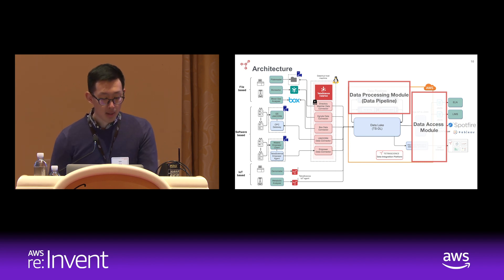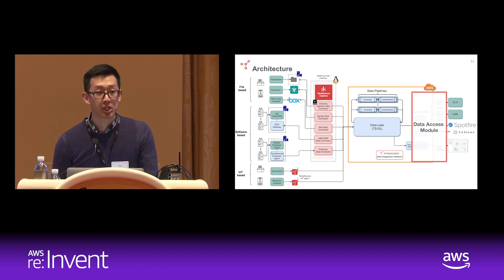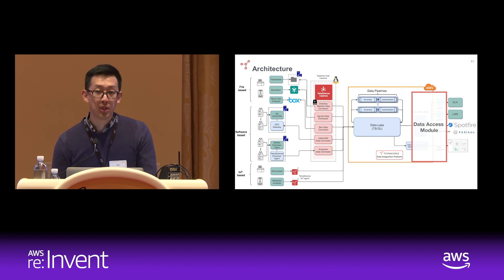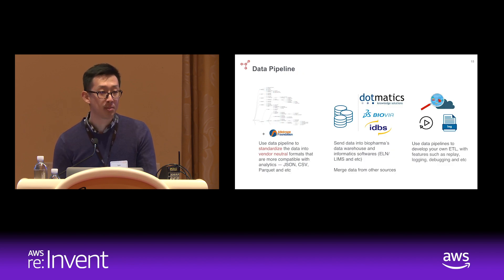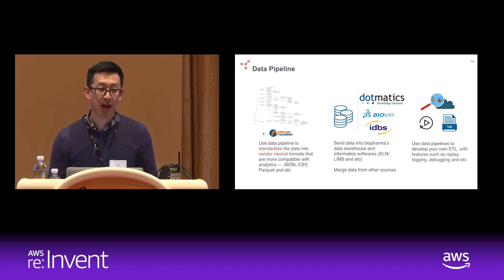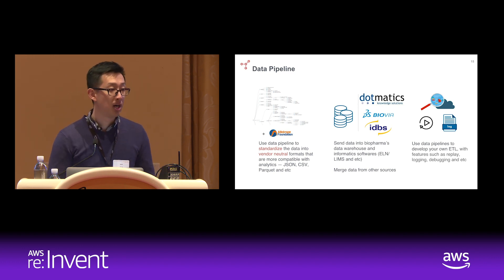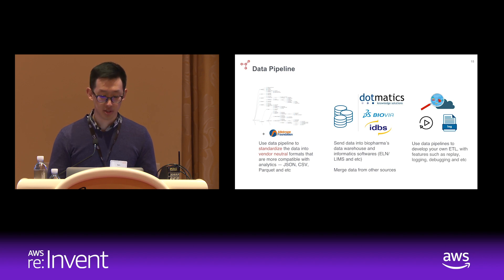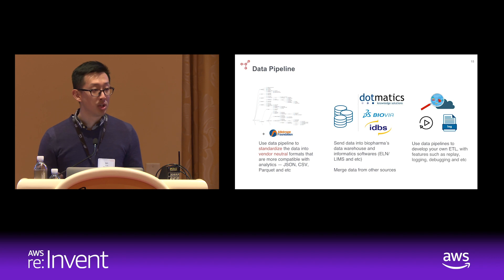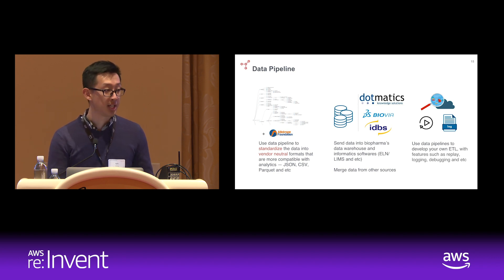The data pipeline's most important job is to standardize the data. We want to provide not only access to raw data, but also cleaned up and structured data. We're working closely with the Allotrope Foundation and our partners and customers to develop common data models for different kinds of data types within the R&D ecosystem. We're also extracting data from vendor-specific formats into CSV files, JSON, Parquet, and other standard open formats, so the data is no longer tied to the vendor producing it. Another purpose of the data pipeline is to perform ETL to push data into customers' data warehouses or other systems in this ecosystem — ELNs, LIMS, and so on — and also to merge data from different sources to enrich data coming from one particular source.